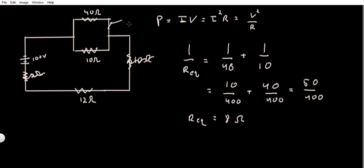8 ohms. So if I do that, I get 8 plus the 12, that gives me a total resistance for the circuit of 20 ohms. So I know that the R_total must be 20 ohms.